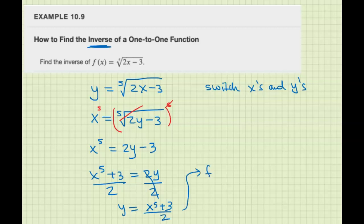This is the inverse. f minus 1 of x, the inverse of the original function, is x to the 5 plus 3 over 2. That's our answer.